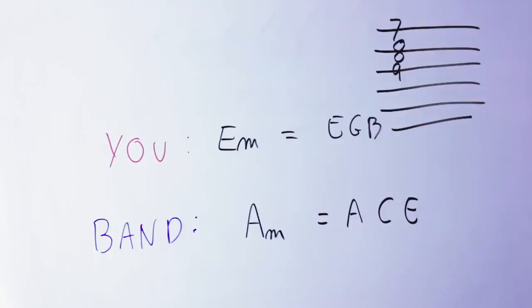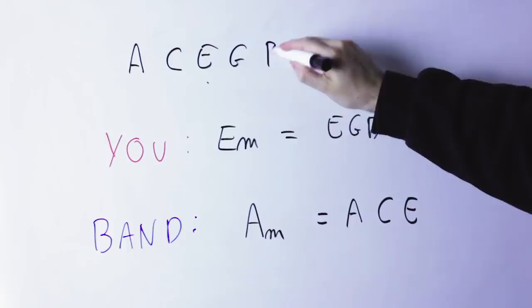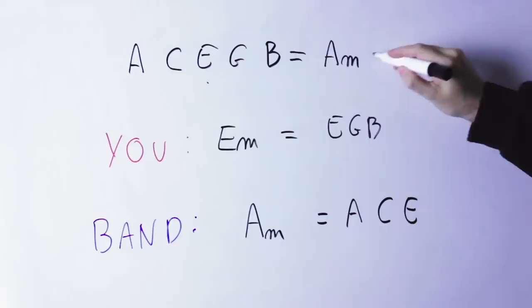So what's happening here? Again the band is playing A minor A C E, I'm playing E minor E G B, the listener is hearing A C E G B and that's an A minor ninth chord. So I'm playing a triad, the band is playing a triad but the listener is hearing a very complex chord.